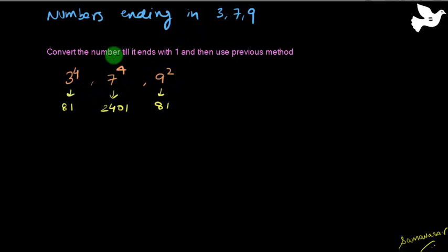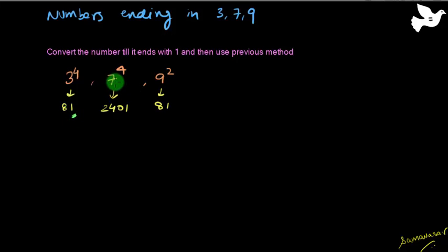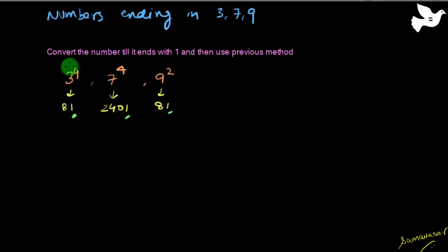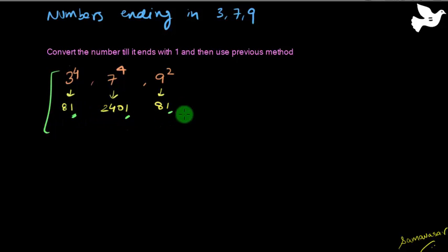3 raised to the power 4 is 81. So if you have any power of 3 that can be expressed as some power of 81, it will end in 1. Similarly, 7 raised to the power 4 is 2401, again ending in 1, and 9 raised to the power 2 is 81, ending in 1. So whenever you have 3, 7, and 9, remember that 3^4, 7^4, and 9^2 give you a units digit ending in 1. You don't even need to remember the entire numbers.